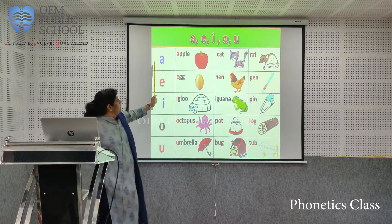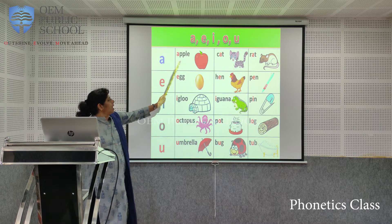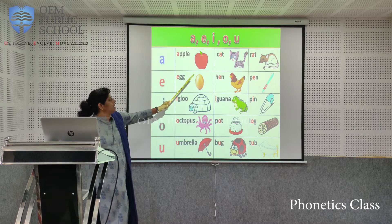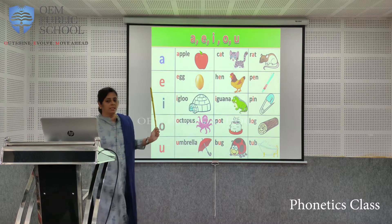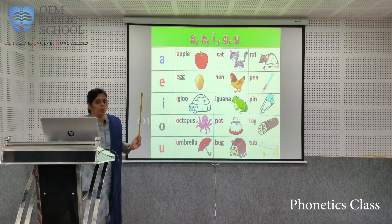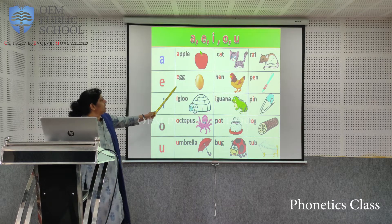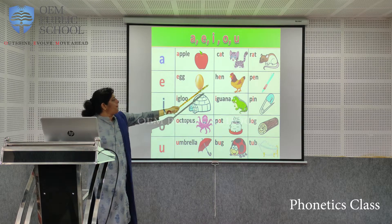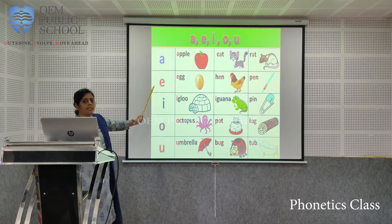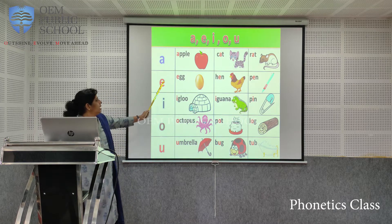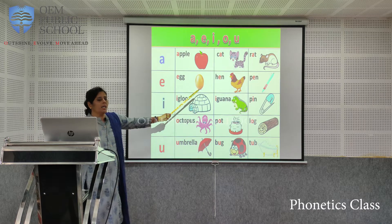Now the words on the board — A as in apple, A as in cat, A as in rat. That is the short vowel A. Next, E as in egg, hen, pen — that is the short E sound.